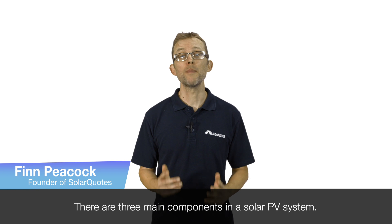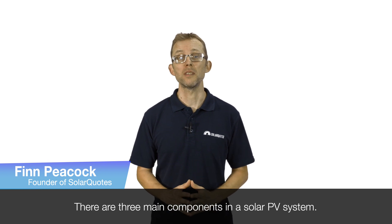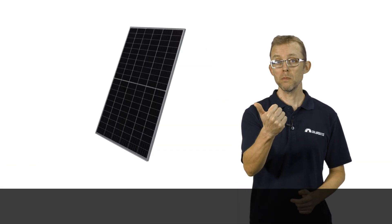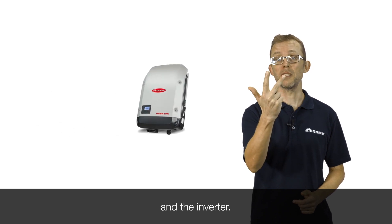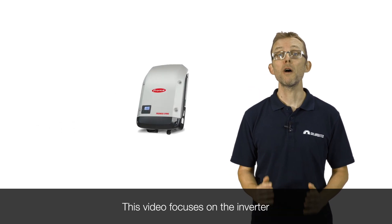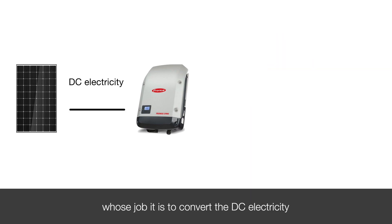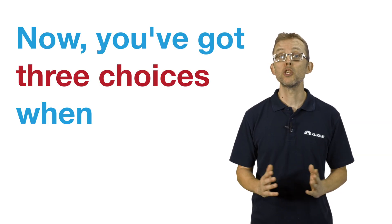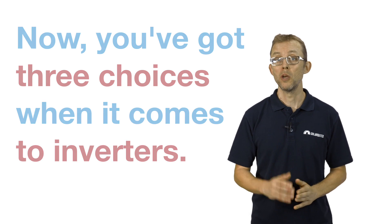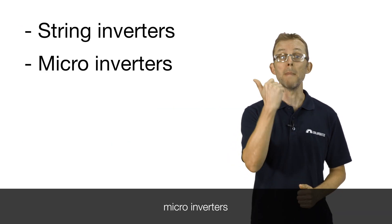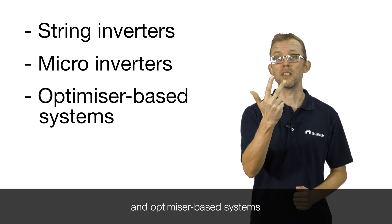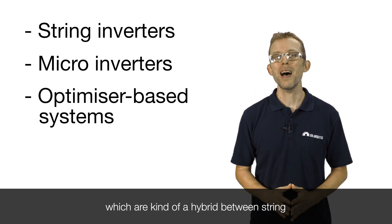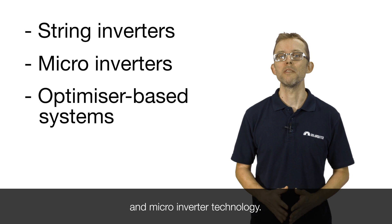There are three main components in a solar PV system: the panels, the racking and the inverter. This video focuses on the inverter, whose job it is to convert the DC electricity generated by the panels into AC electricity that is used by your home. You've got three choices when it comes to inverters: string inverters, micro-inverters and optimizer-based systems, which are kind of a hybrid between string and micro-inverter technology.